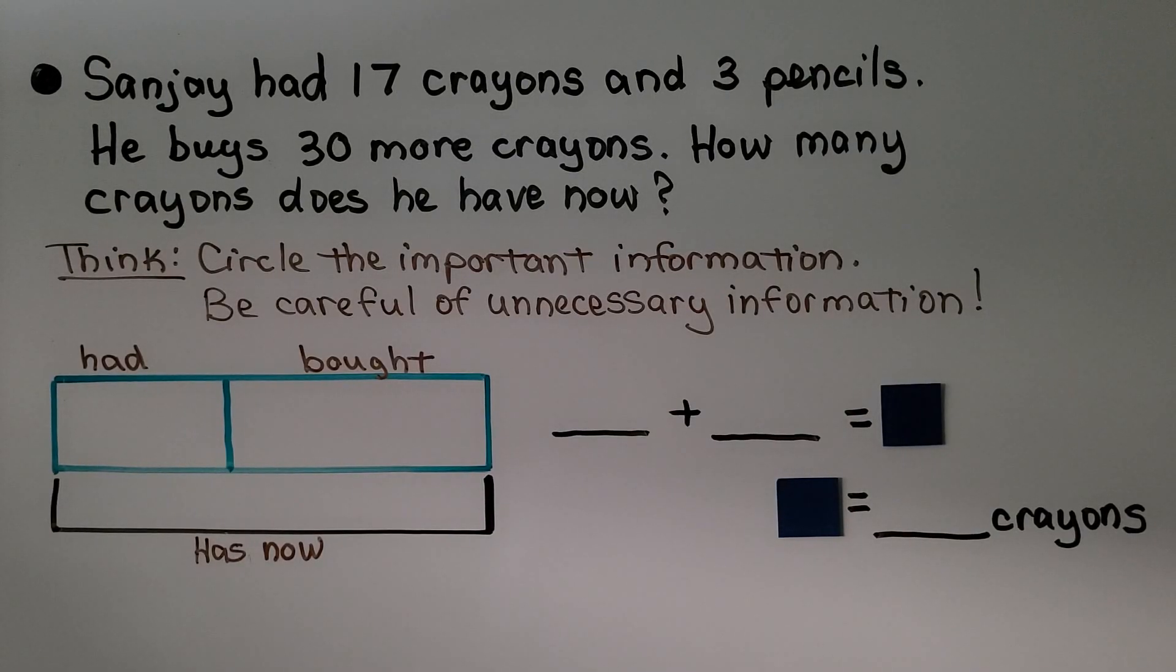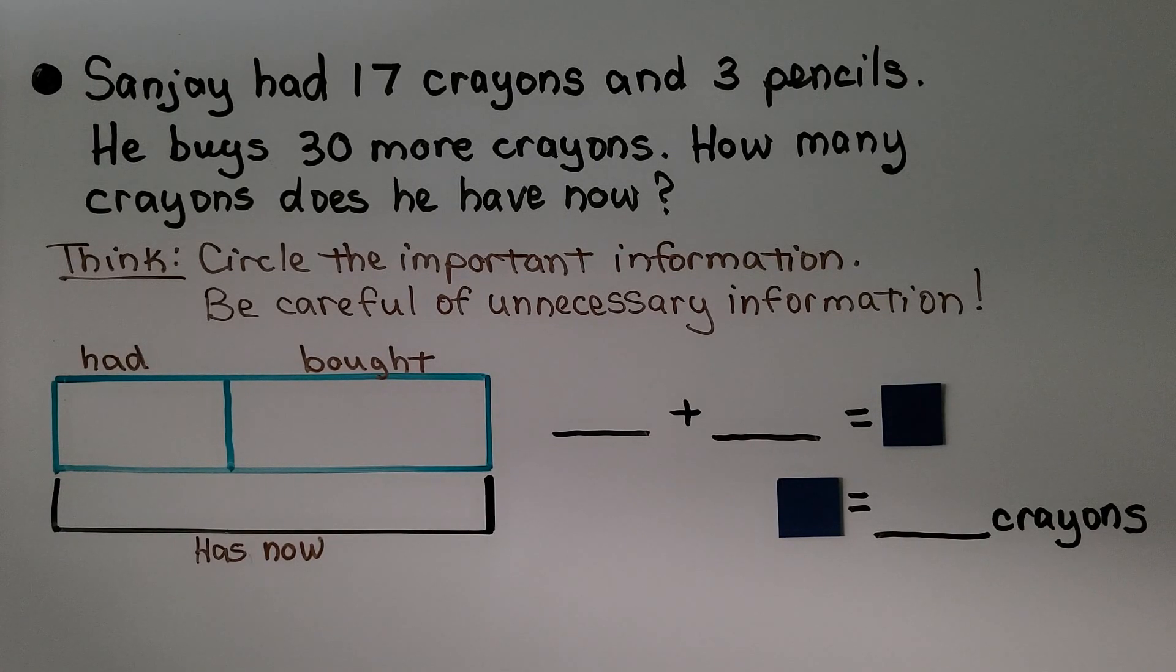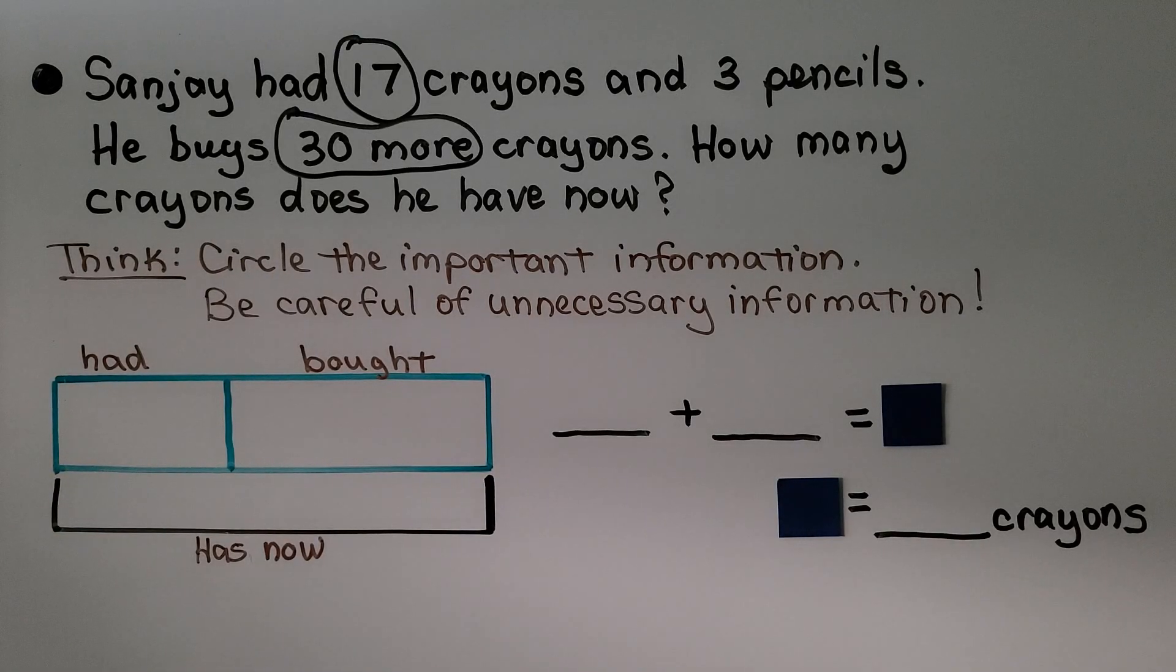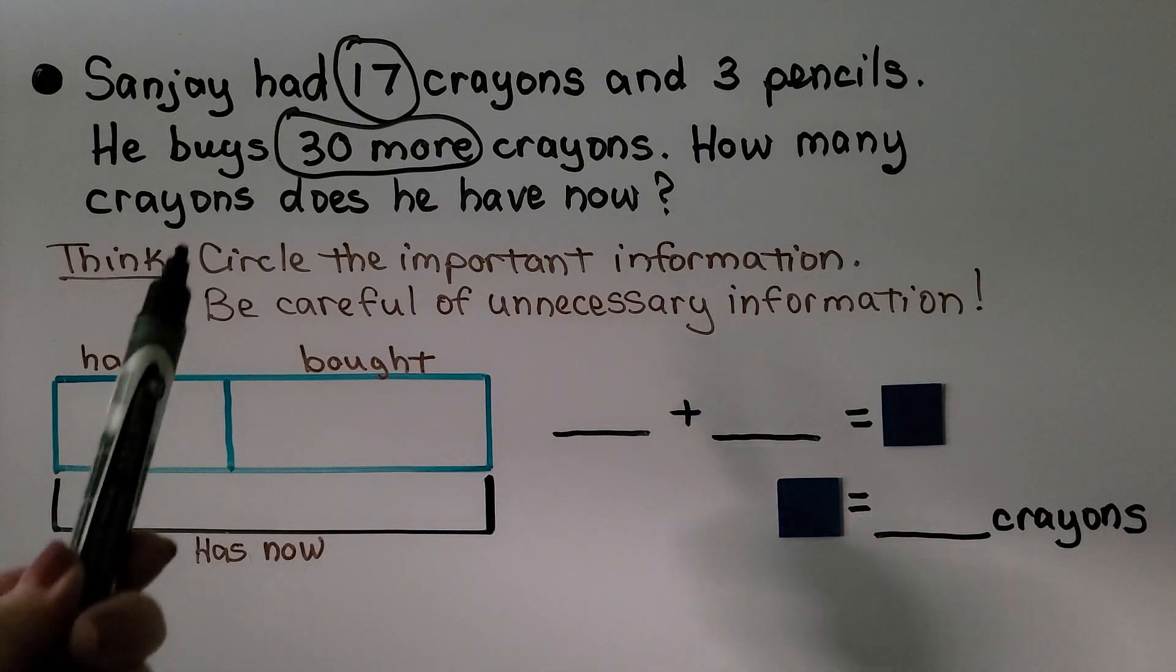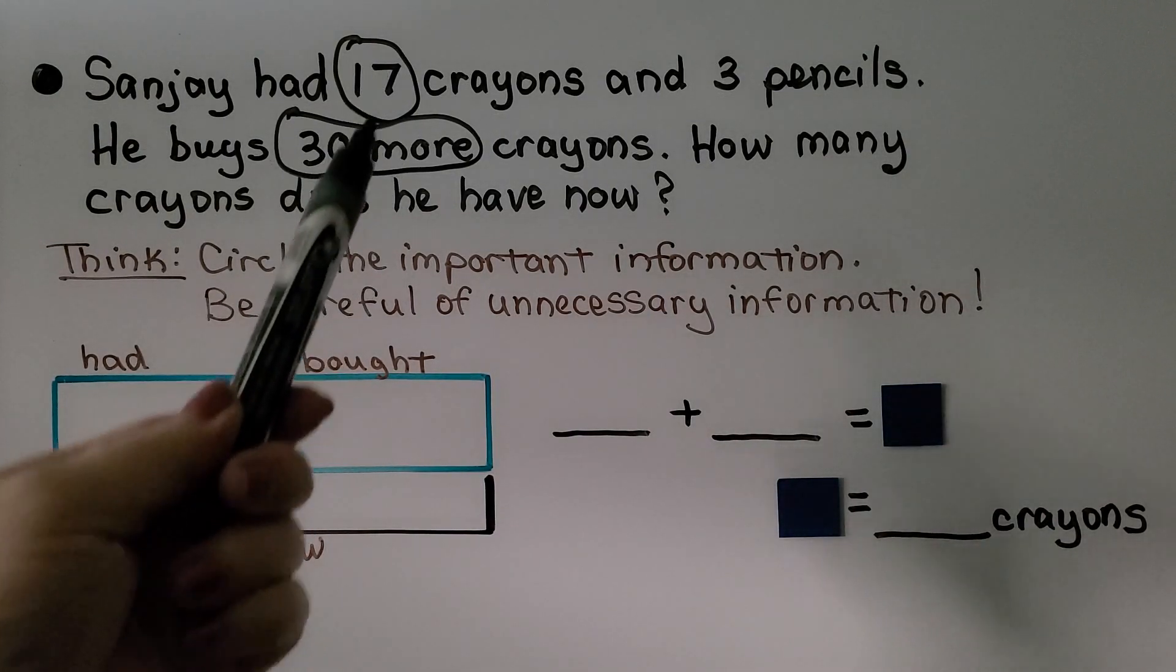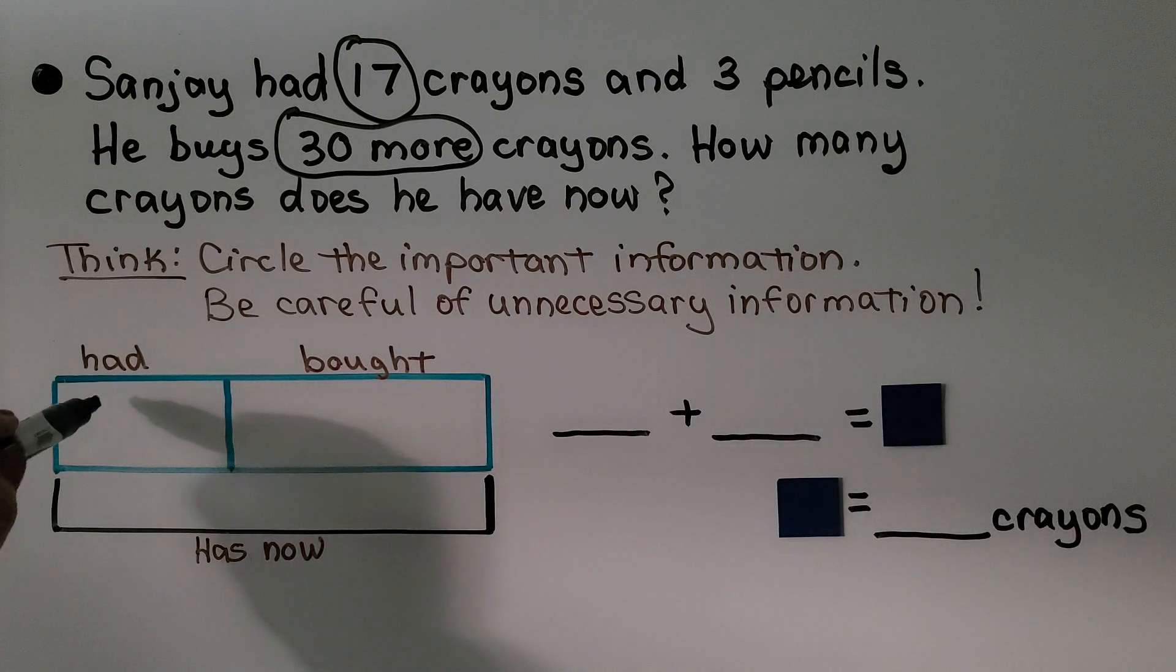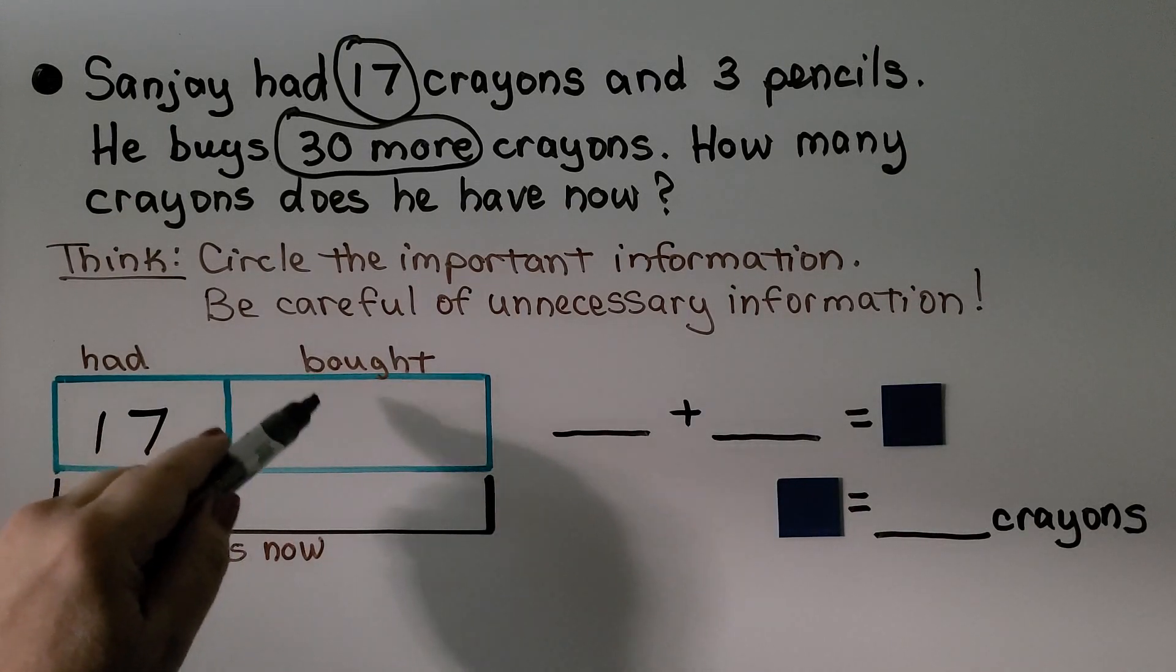Sanjay has 17 crayons and 3 pencils. He buys 30 more crayons. How many crayons does he have now? We think, let's circle the important information. What are we looking for? We're looking for how many crayons he has now. He has 17 crayons. He buys 30 more. That means we're going to add 17 and 30. We have to be very careful if there's unnecessary information. Do we need to know he has 3 pencils? No, we don't. It's not important.